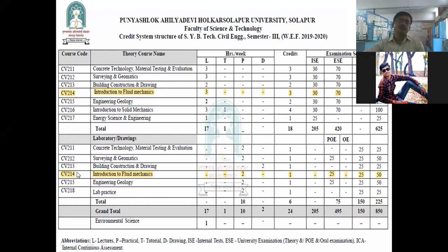In the laboratory, the subject code is CD 214 — Introduction to Fluid Mechanics. Two hours per week are allotted for practicals, and the credit is one. You must separately pass the oral examination. There are 25 marks for term work and 25 marks for POE (Practical Oral Examination). The ICA — Internal Continuous Assessment, also called term work — is based on assignments and quizzes, with a maximum of 25 marks.